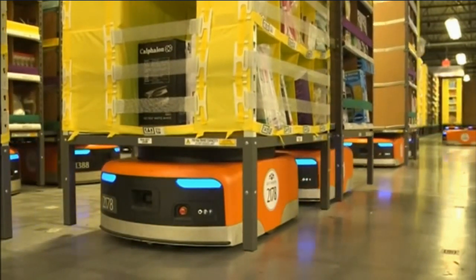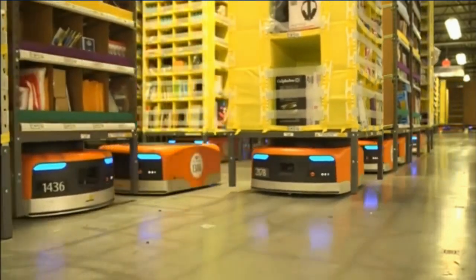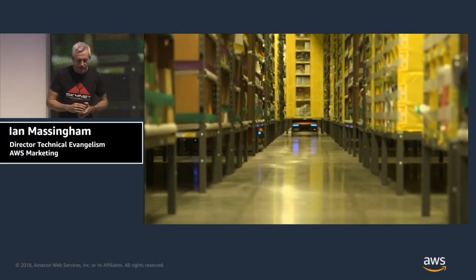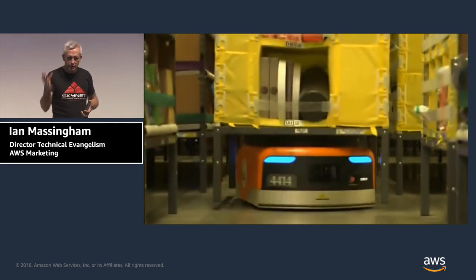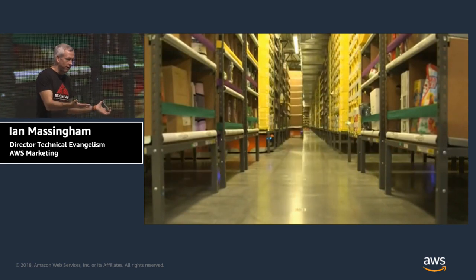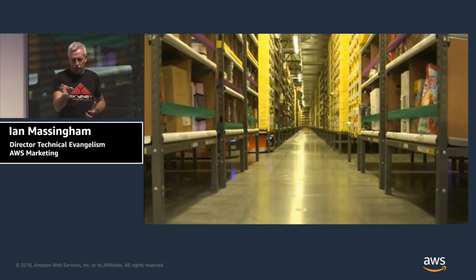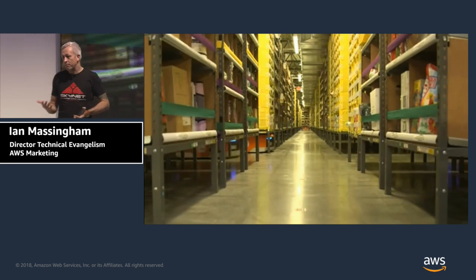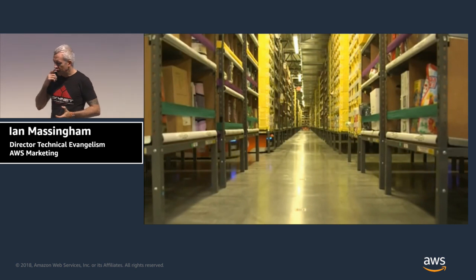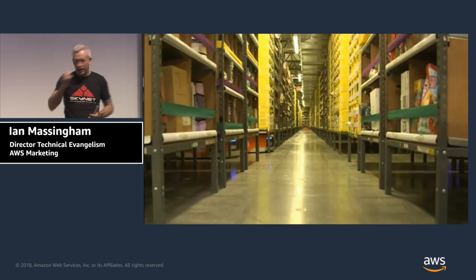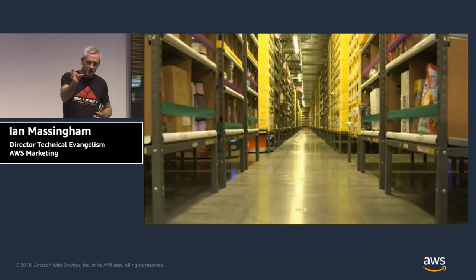The grand vision of the founders at Kiva Systems was: imagine if pick workers — the people that take products and put them in packaging for dispatch — magically had inventory items teleported into their hands. So rather than walking around a 50, 100, 200, 300,000 square foot facility, they would stand in one place and the inventory items that you order would magically appear in their hand. And that is actually what this robotic system does. The operators stay in one location and the robots automatically bring the inventory to them.